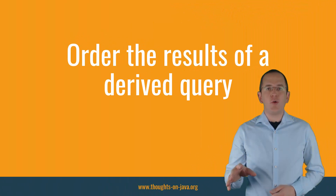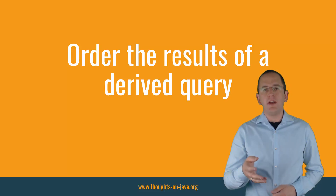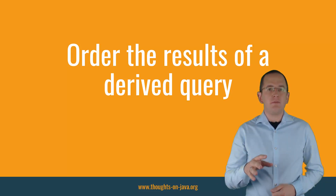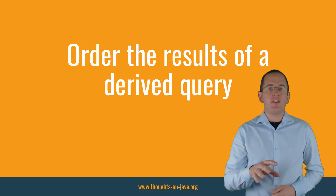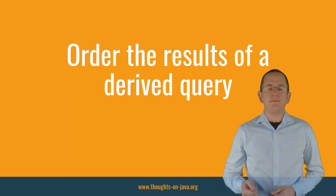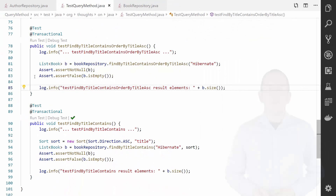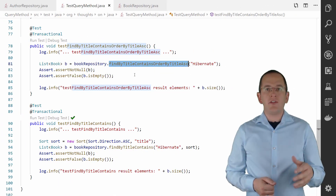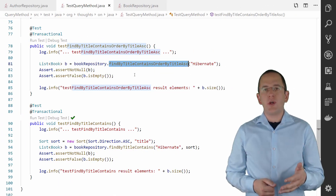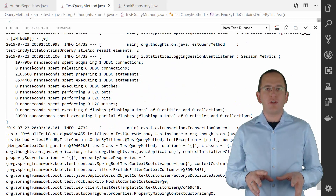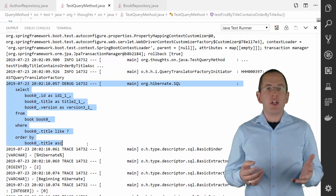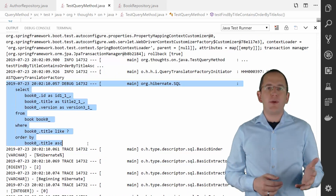You can also order your query results. In JPQL, this would require an ORDER BY clause in your query. With Spring Data JPA, you just need to add the words OrderBy to your method name, followed by the name of the entity attribute and the abbreviations Asc or Desc for your preferred order. This query retrieves all Book entities whose title contains a provided string in ascending order of their title. When you call this method on the BookRepository, Spring Data JPA and Hibernate generate an SQL statement with the expected ORDER BY clause.